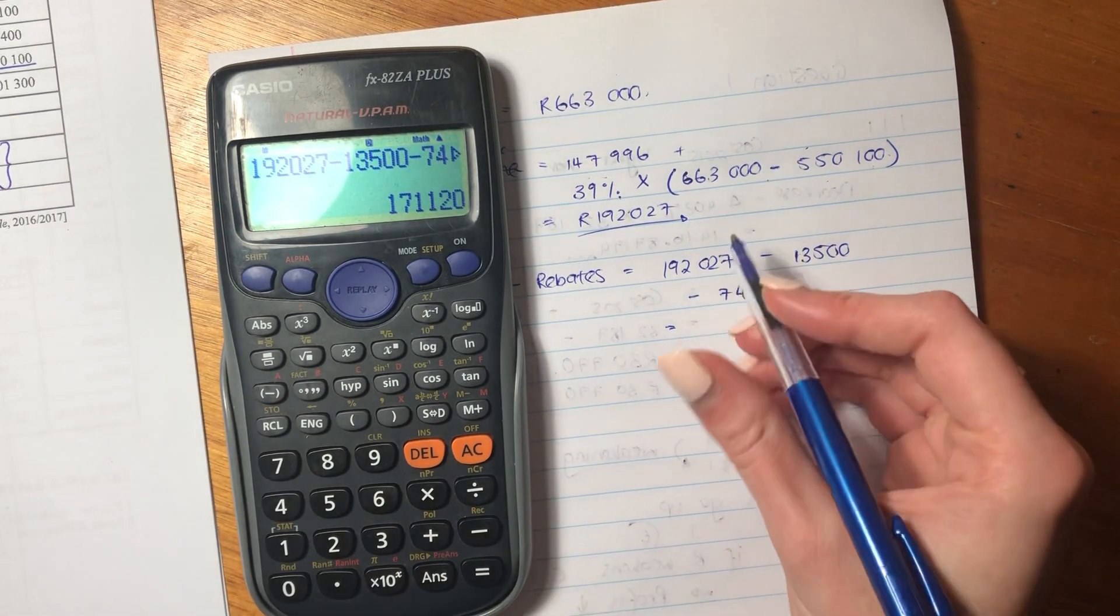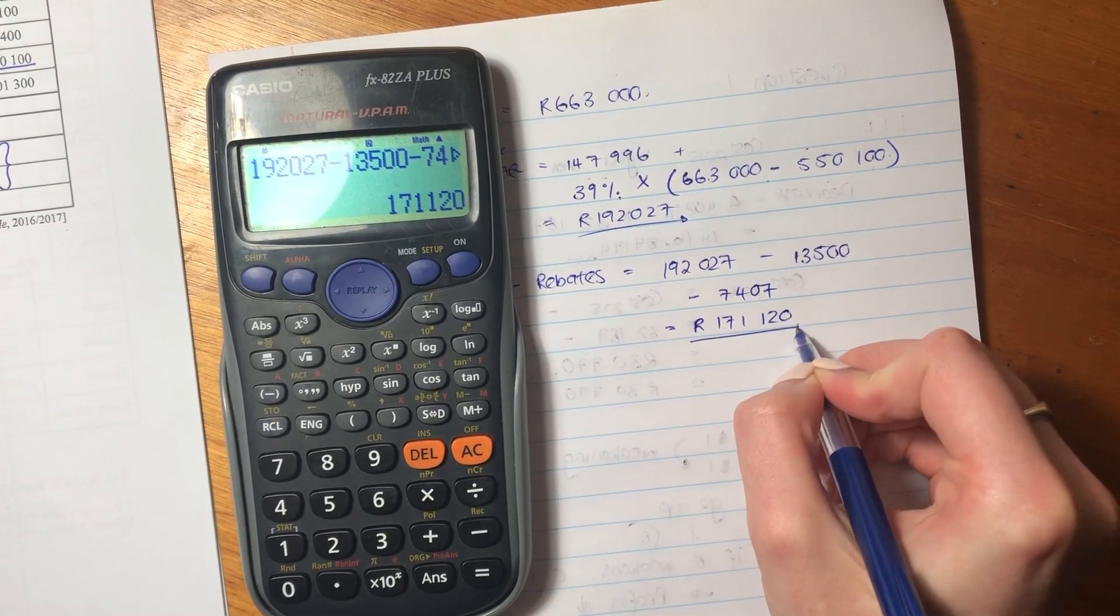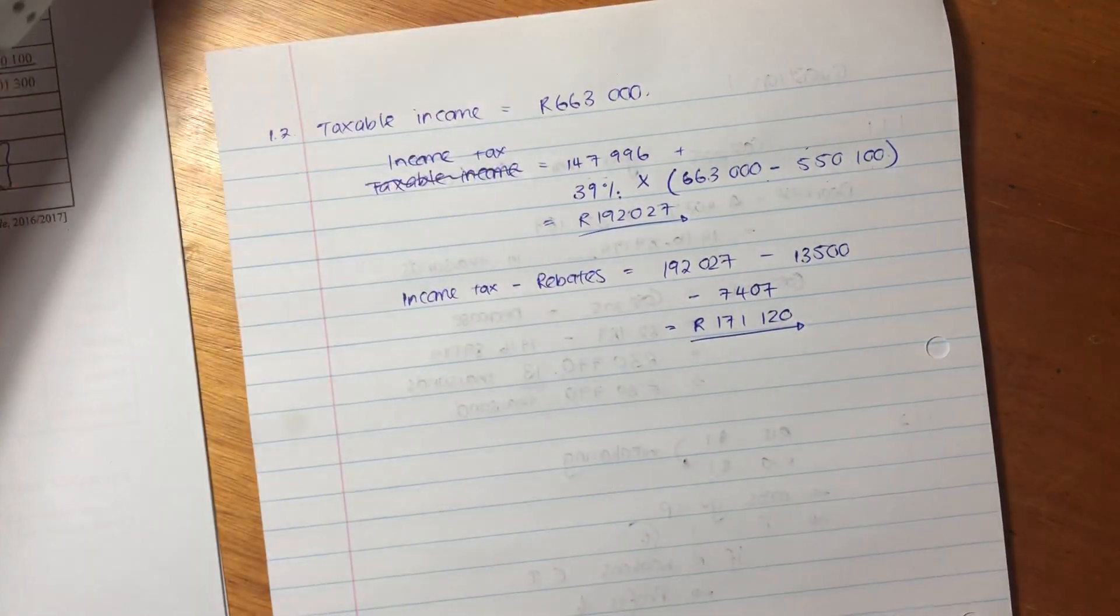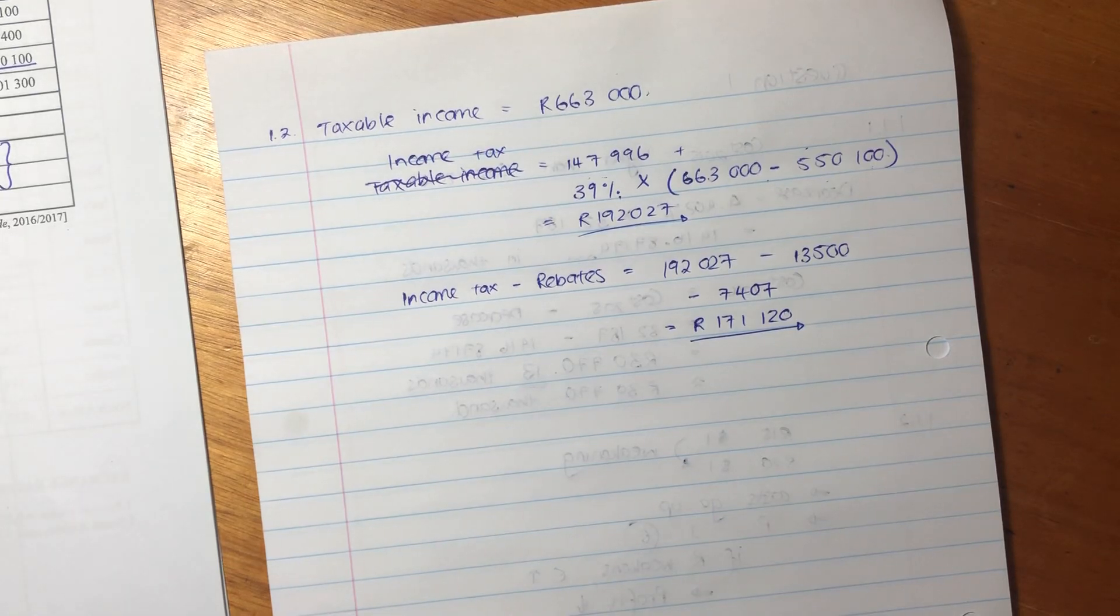And that is how much he is going to pay in tax to SARS. Okay, so that is his income tax. Does that make sense? Okay, let's now move on to 1.3.